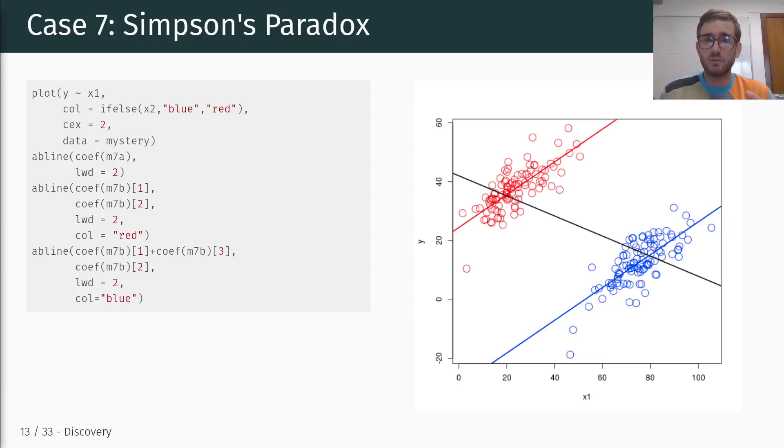In other words, if we don't include a grouping for x2, we're kind of misspecifying the relationship between x1 and y, and this is a common phenomenon in the social sciences and beyond, and this is what we call Simpson's paradox,